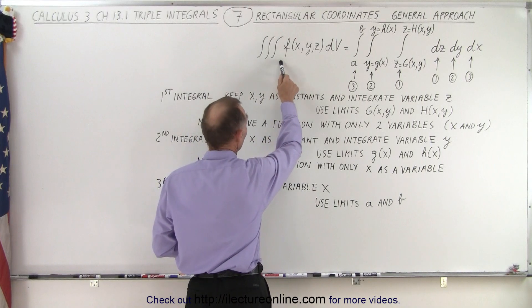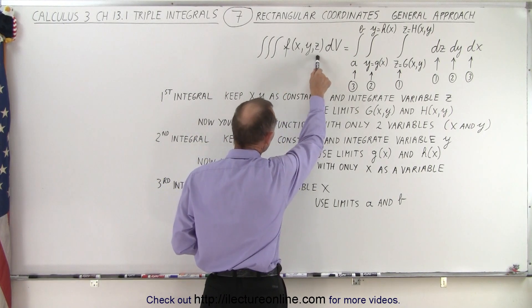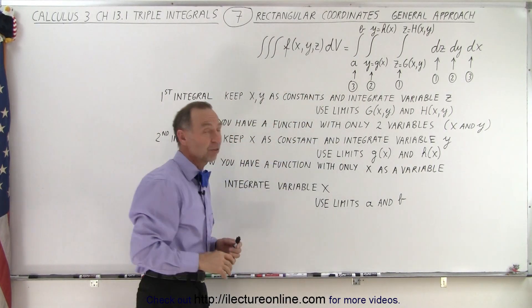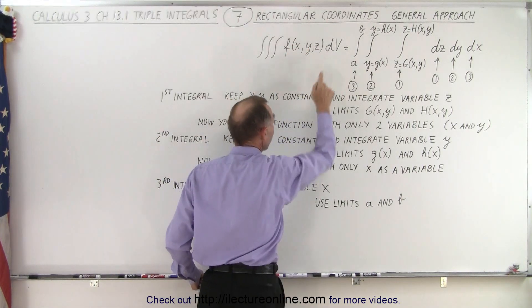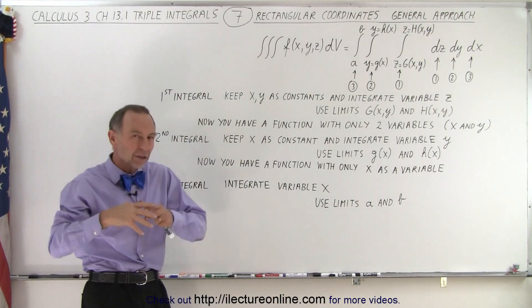The general approach is as follows. We're going to have a triple integral, sometimes of some function times dv. Sometimes there is no function here. We just replace it with one. It's simply the triple integral of dv. And that means we're simply finding the volume.